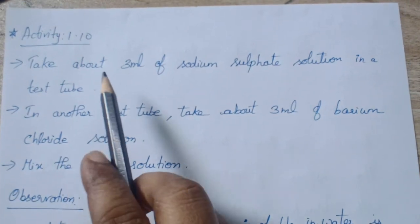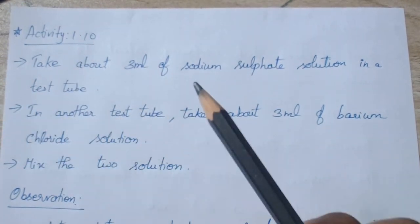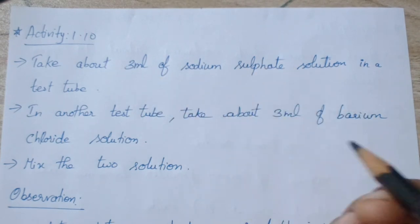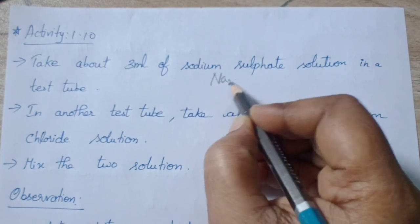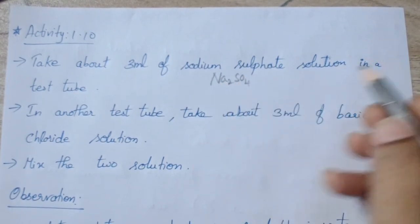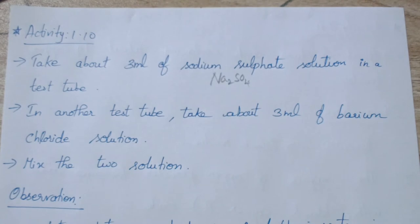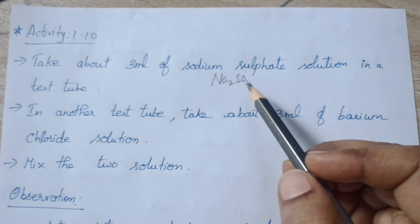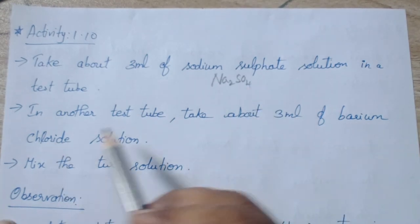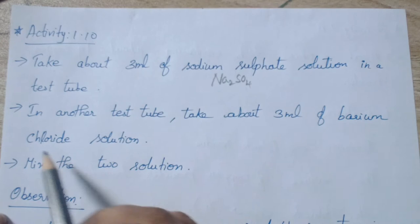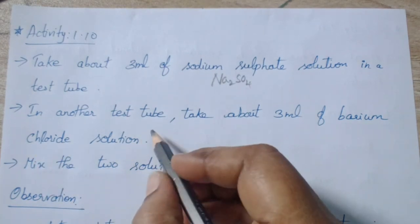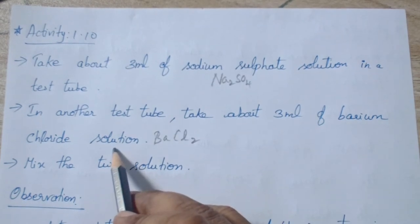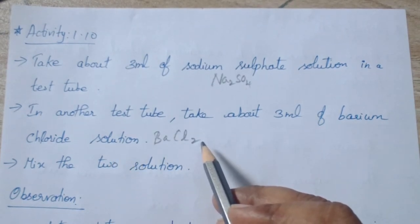In Activity 1.10, what we are going to do is take about 3 ml of sodium sulfate solution. Sodium sulfate — what is the formula? Na₂SO₄. Sodium sulfate solution in a test tube — it will be in the form of crystals, so it has to be dissolved in water. In another test tube, take about 3 ml of barium chloride. Barium chloride is BaCl₂. It is also in powder form and has to be mixed with water.